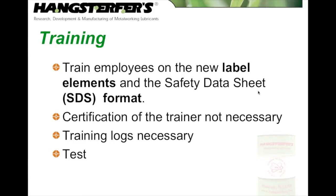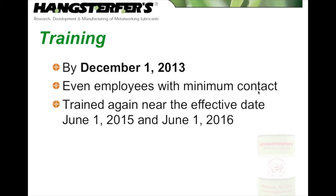For training: employees must be trained on the new label elements and the safety data sheet SDS format — that's what the training has to encompass, and that's what we're going to cover in detail today. Certification of the trainer is not necessary. You don't need a doctorate's degree, an environmental degree, or to be certified as a trainer. Training logs are necessary, just as with any safety training at your facility, like forklift training. This particular GHS training does require a test at the end, and we will be having that test. Training must be completed by December 1st, 2013, and that's what we're having this webinar for.